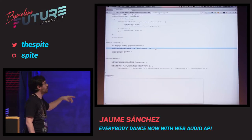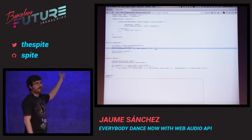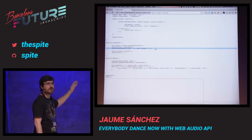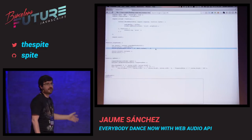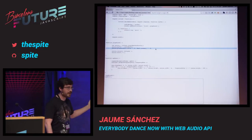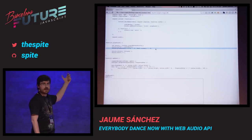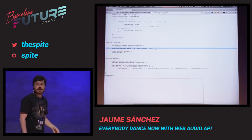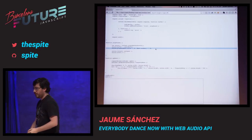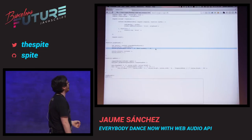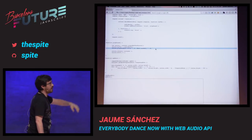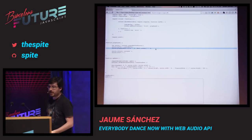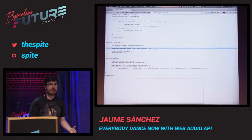We're creating several buffer source nodes in parallel every time I click. All those nodes are connected into the analyzer, so when you play several sounds they get accumulated and then go to the destination. The frequencies accumulate — this is telling us the amount of energy on each frequency band. This is very useful if you want to create some kind of visualization or sound-reactive application, because lower frequencies in this part of the spectrum are usually the bass, and going further into the spectrum it's higher sounds.